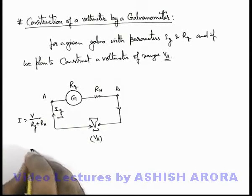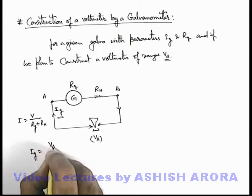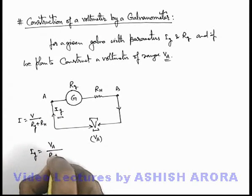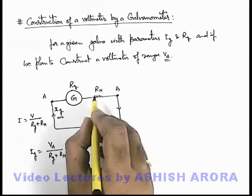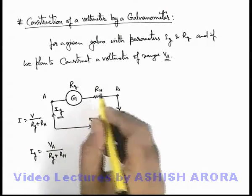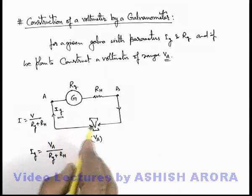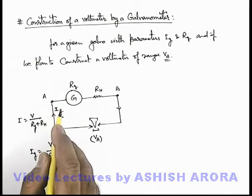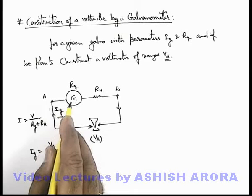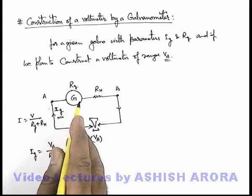So in this situation, I_g must be equal to V_a by R_g plus R_h. If this high resistance is not there in series then obviously due to low value of coil resistance R_g very high current flows, which will be very high compared to the full deflection current due to which the galvanometer will get damaged.